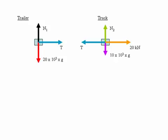In the horizontal direction we have the force of the engine of the truck, the 20 kN force acting in the positive x direction, and the tension in the tow bar T acting in the negative x direction.